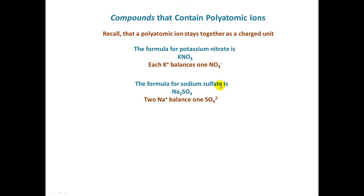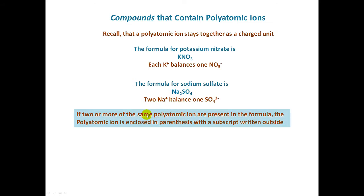The formula for sodium sulfate: we have two sodium ions balancing one sulfate ion. Remember, the sulfate ion has a negative-two charge, and the sodium ion has a plus-one charge. So we're going to need two sodium ions for each sulfate ion. If two or more of the same polyatomic ion are present in the formula, the polyatomic ion is enclosed in parentheses with a subscript written outside.